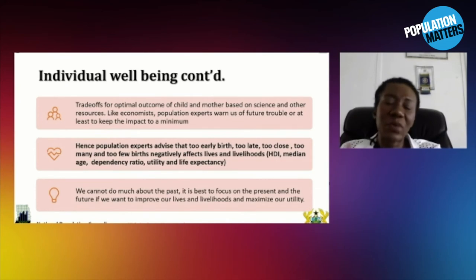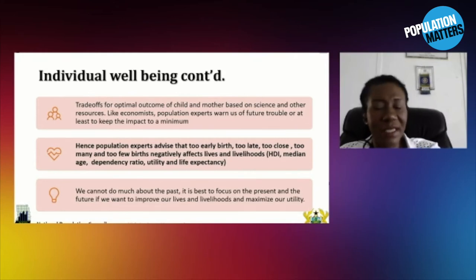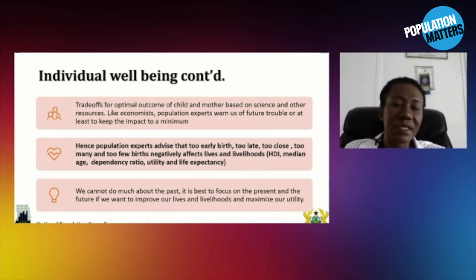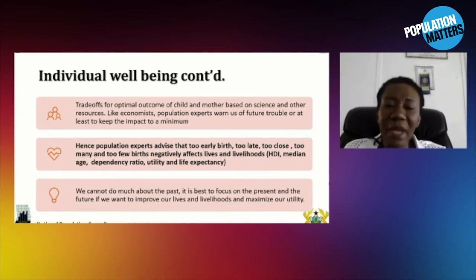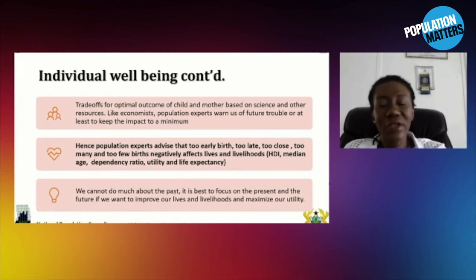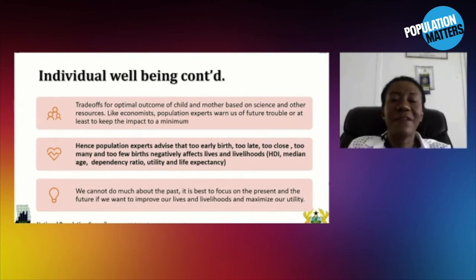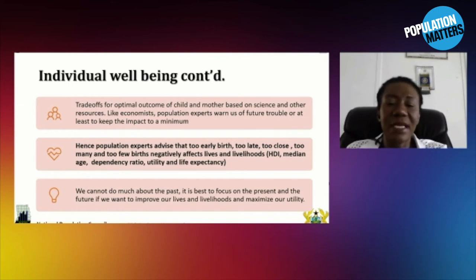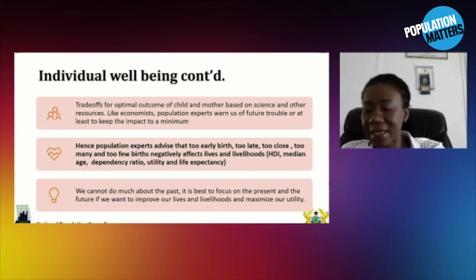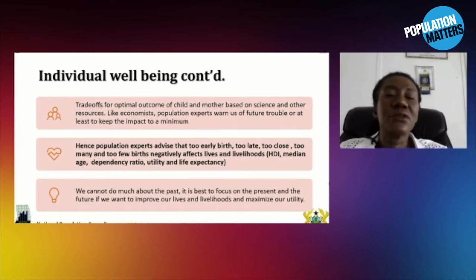That is where population experts also fit in, like any other field. An economist would tell us that some investments are not good and will not yield good returns. Population experts would also advise that too early, too late, too close, too many, and too few births negatively affect lives and livelihoods — not in the same magnitude, but they definitely do. In the developing world, we have too many, too late, too close births affecting our lives and livelihoods. The harmony and the balance is really where we should all strive to be.